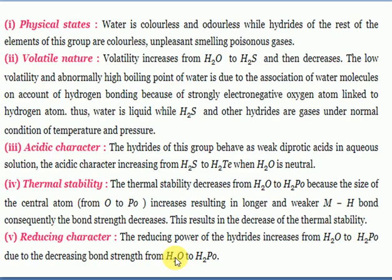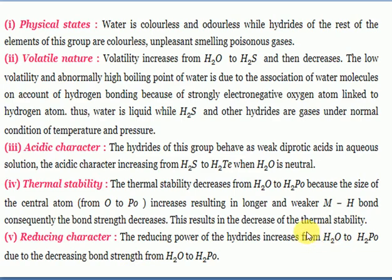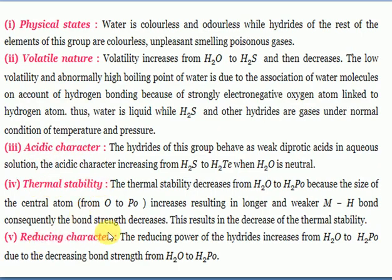Reducing power of hydrides increases from H₂O to polonium hydride due to decreasing bond strength. Thermal stability decreases from H₂O to polonium hydride because the size of the central atom increases, resulting in longer and weaker M-H bonds. Consequently, bond strength decreases and thermal stability decreases going down the group.